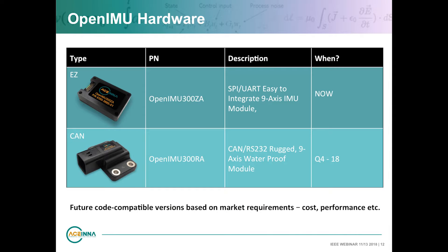Now we're ready to run those algorithms on actual hardware. OpenIMU hardware consists of highly calibrated, very accurate inertial navigation platforms that have been opened up so they can host user algorithm code. There's a toolchain and open source algorithm code that works as a baseline for your development project in your embedded navigation application. The hardware for OpenIMU comes in a couple different flavors: the EZ module with SPI and UART interface — an easy-to-integrate 9-axis IMU module powered from 3 to 5 volts, already deployed in high volume.